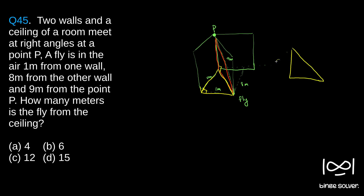In the yellow triangle, we have eight meters and one meter. Using the Pythagorean theorem, this base distance is the square root of eight squared plus one squared — that is root of 64 plus 1, which is root of 65. We'll keep it as root of 65 since we only need the square value for the next step.